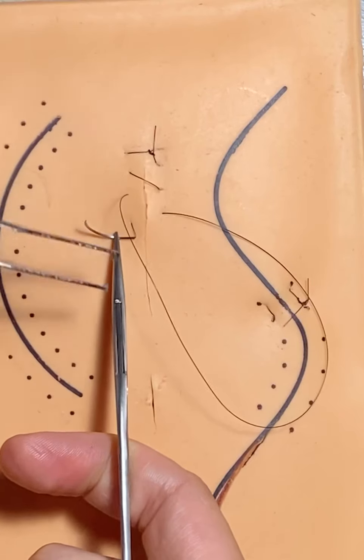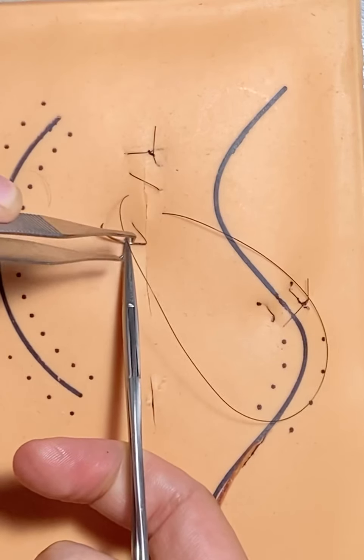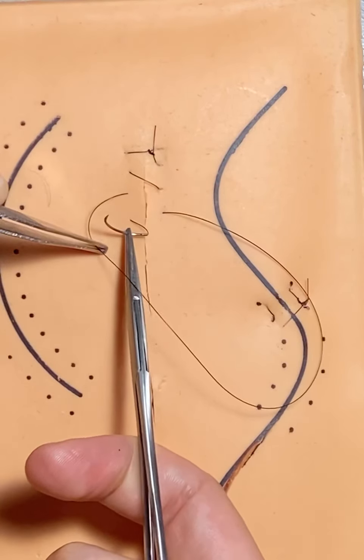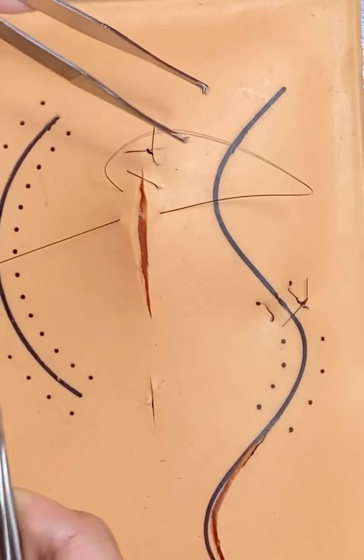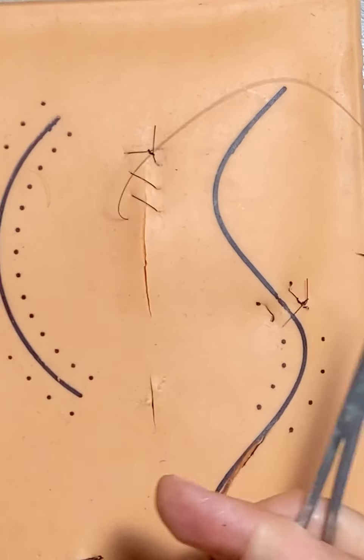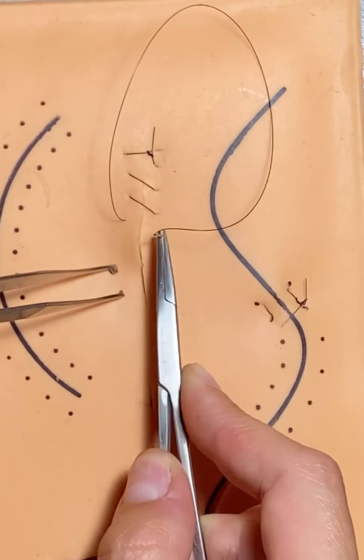You just want to make sure that you come out with your needle, not in your loop. That's a different technique that locks each one. That's not what we're doing here. Every time you pull it through, it tightens it down a little bit more.